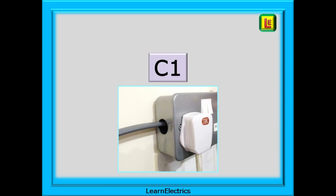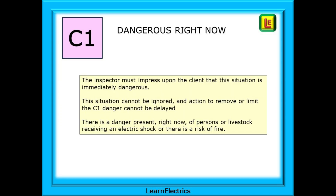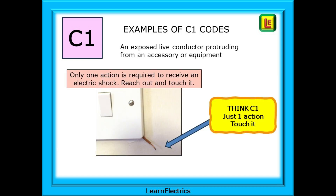Taking a closer look at the C1 observation code: C1 is dangerous right now. The inspector must impress upon the client that this situation is immediately dangerous, that it cannot be ignored, and that action to remove or limit the C1 danger cannot be delayed. There is a danger present right now of persons or livestock receiving an electric shock, or there is a risk of fire. Some examples of C1 codes: an exposed live conductor protruding from an accessory or some equipment. This is immediately dangerous because only one thing needs to happen to receive an electric shock — just reach out and touch the wire. I think of C1 as just one action: touch it. And I find that this helps me to visualise the code better — C1 for one action.